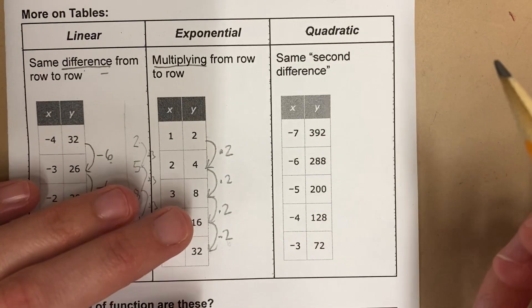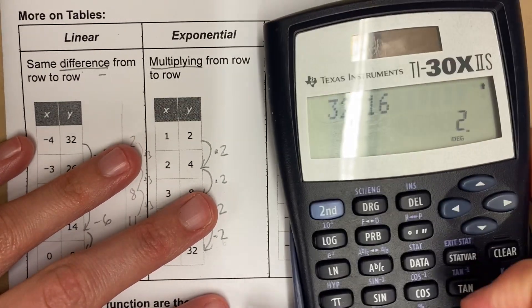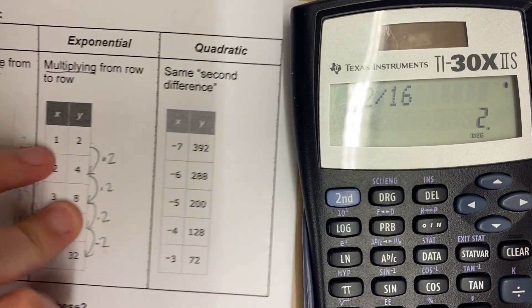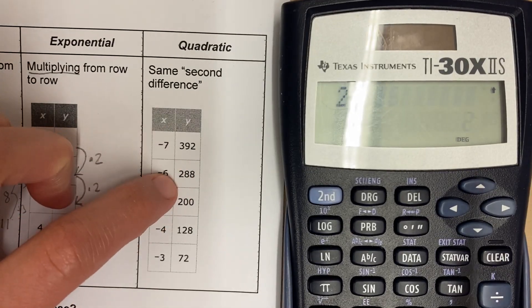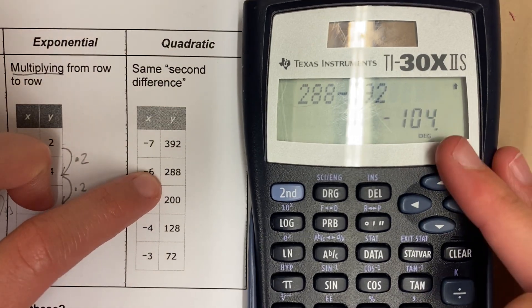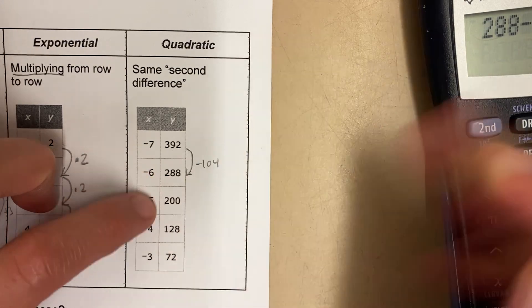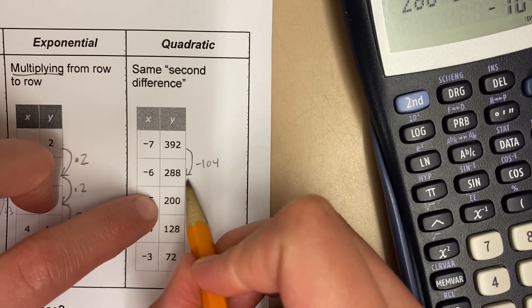Quadratics are a little bit trickier to recognize. And notice I have big numbers here, super annoying. That's okay. I'm going to find out what the difference is from this row to this row. So 288 minus 392. That's minus 104. We're going to use a calculator for this.